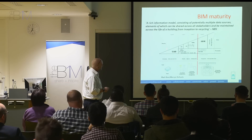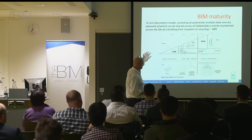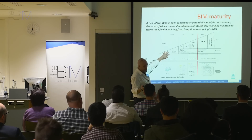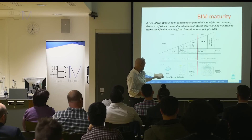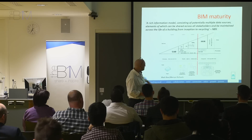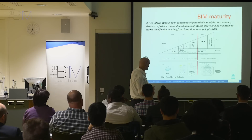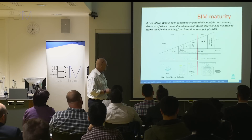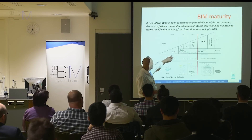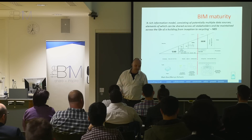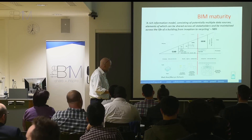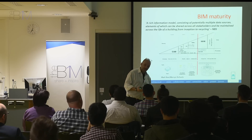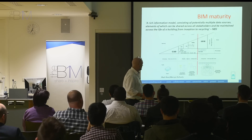At a very basic level, BIM Level 0 is just using basic CAD or even ordinary pencil drawing — we're just drawing stuff and sharing paper. Level 1 gets a little more advanced. We might do a bit of 3D, use some processes like Avanti or BS 1192:2007. We might produce some models and objects, do a bit of collaboration, and share some files.